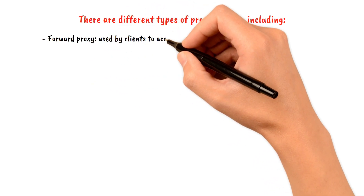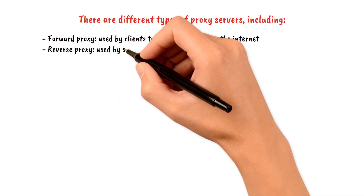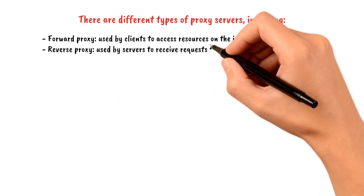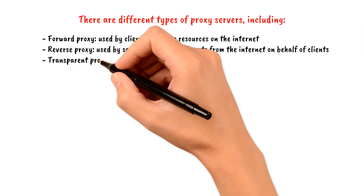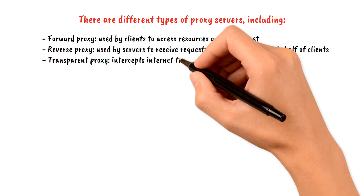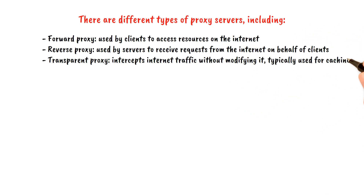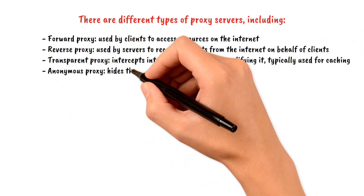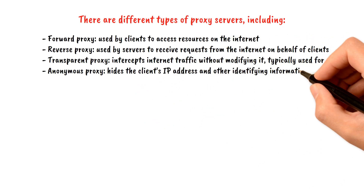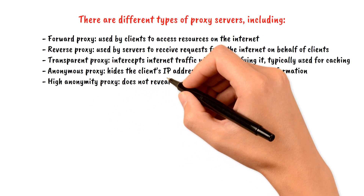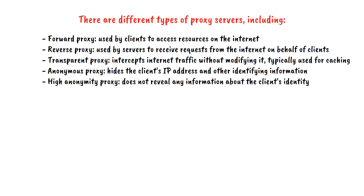Forward proxy: used by clients to access resources on the internet. Reverse proxy: used by servers to receive requests from the internet on behalf of clients. Transparent proxy: intercepts internet traffic without modifying it, typically used for caching. Anonymous proxy: hides the client's IP address and other identifying information. High anonymity proxy: does not reveal any information about the client's identity.